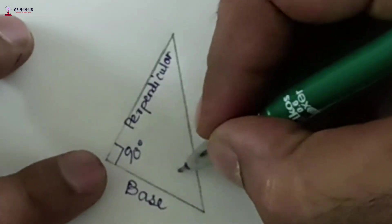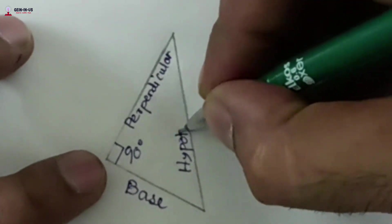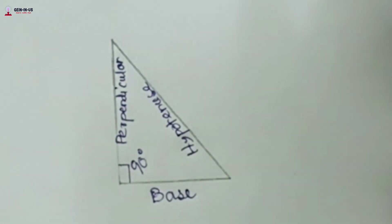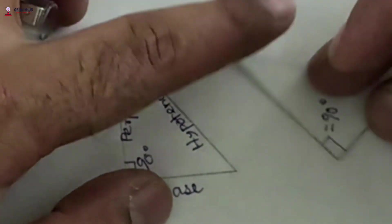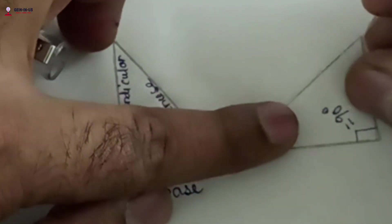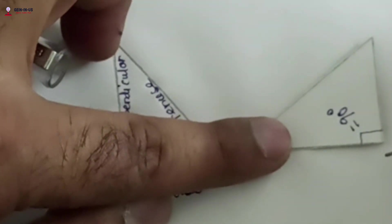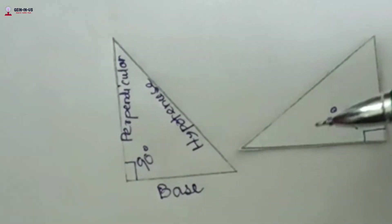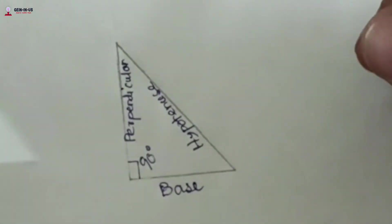This side is the hypotenuse. If you rotate the triangle, then you can take this as perpendicular and this as base — so perpendicular can be any one, as per your choice.